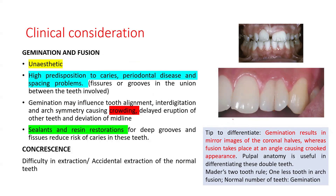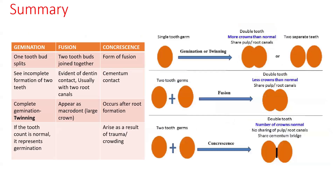A tip to differentiate gemination from fusion: normally in fusion there is one less tooth in the arch, while in gemination the tooth count is normal — though this is not always true in cases involving supernumerary teeth. Additionally, in gemination the two halves usually appear identical to each other like twins with just a small notch, whereas in fusion the components may be fused at an angle, helping you identify it as fusion.